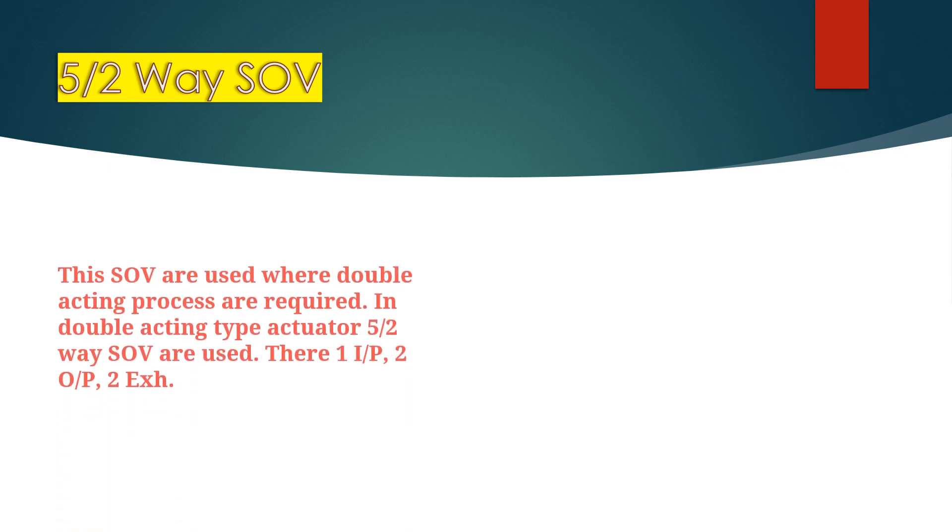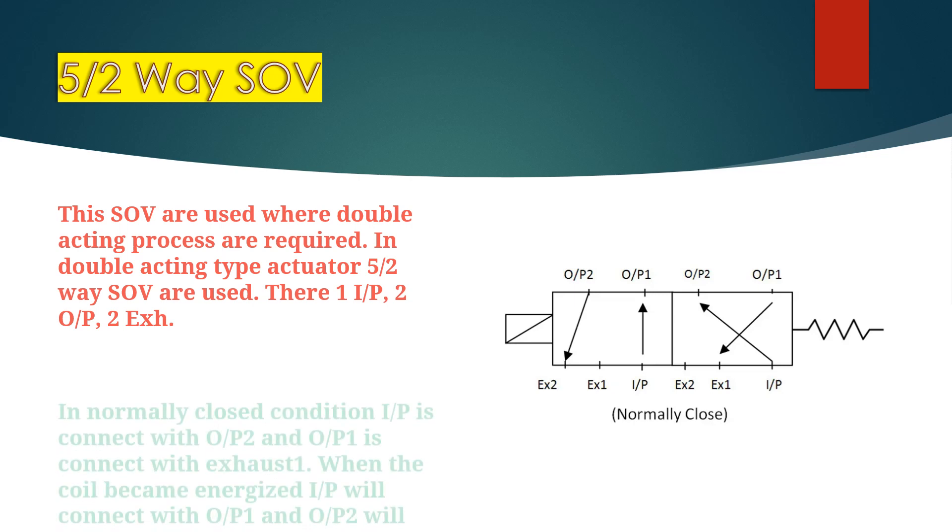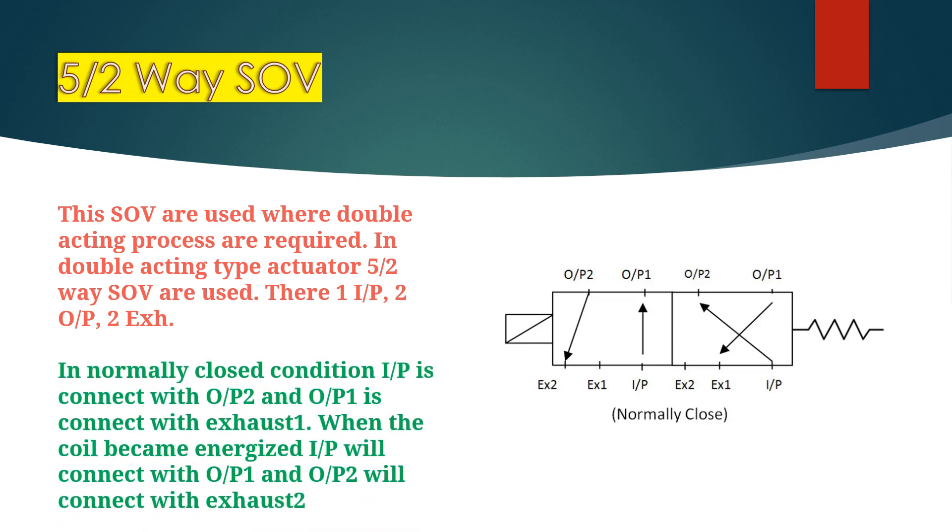Next is 5 by 2 way solenoid valve. These solenoid valves are used where double acting processes are required. In double acting type actuators, 5 by 2 way solenoids are used. There are 1 input, 2 outputs, and 2 exhausts. In normally closed condition, input is connected with output 2, and output 1 is connected with exhaust 1. When the coil becomes energized, input will connect with output 1, and output 2 will connect with exhaust 2.